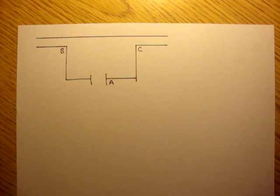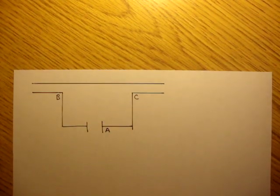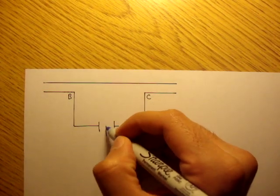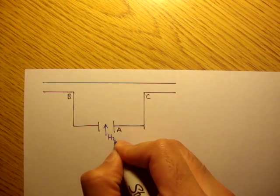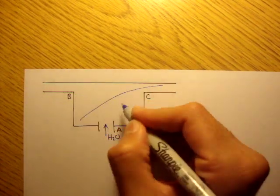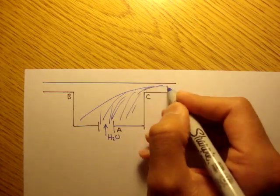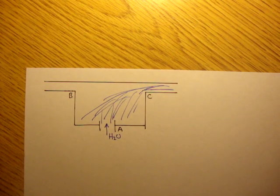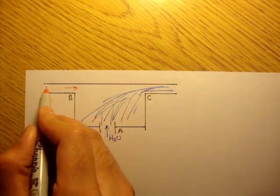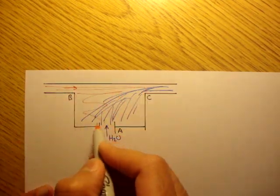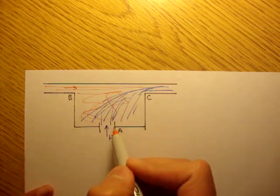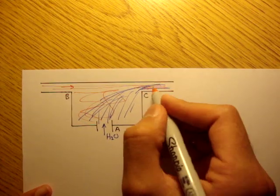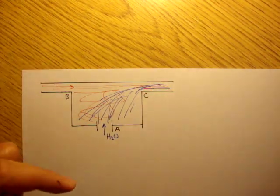Let's do another example using mass conservation. Here we have a tank, and in this tank, from point A, water is being pumped in here, and it's coming out at C. At the same time, from B, we have oil coming in. The oil and water come together in the tank, they mix, and they move out. They leave through C, both of them.